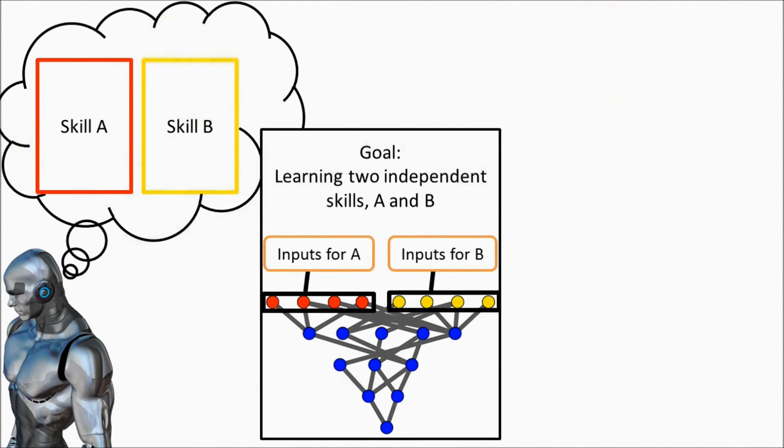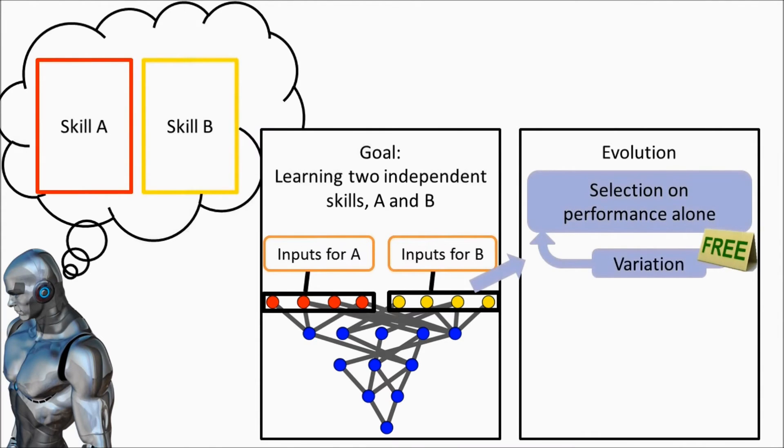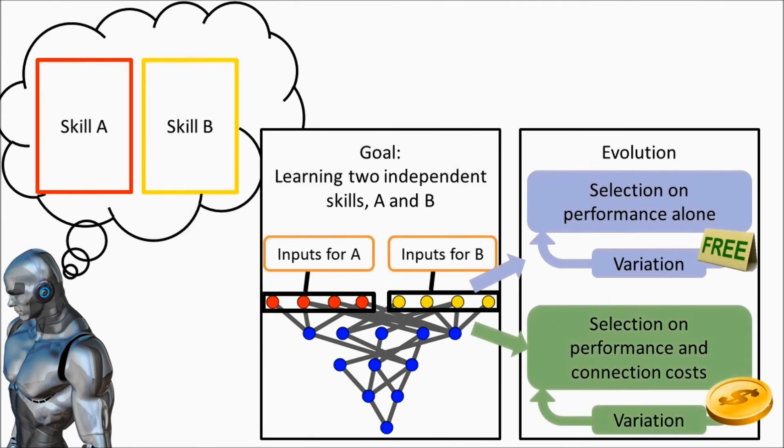We evolved neural networks in an environment where it was necessary to learn two skills in a sequence. In one experiment, selection was for performance on the tasks alone, but in the other, we added a cost for network connections.